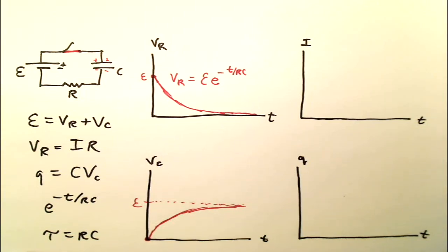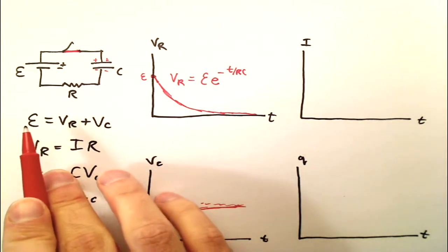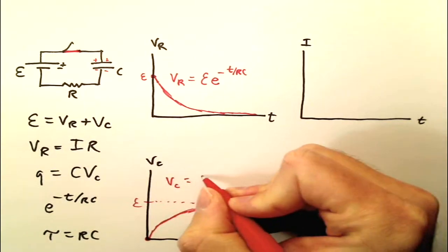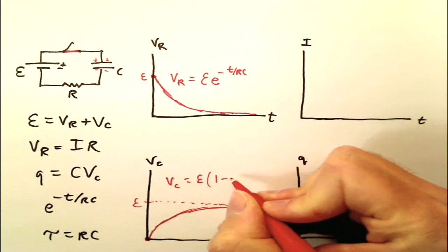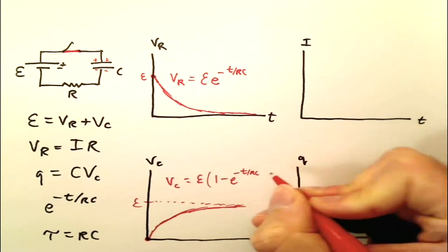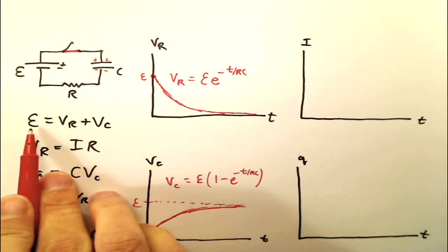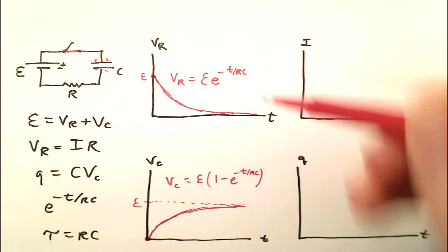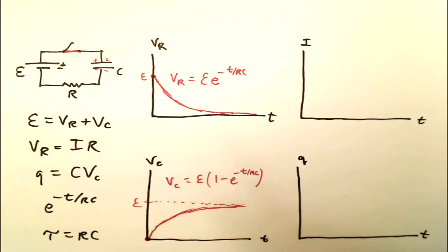What about VC? VC you can get from VR by subtracting VR from the EMF. So E minus this expression gives us VC, so VC gives us E, and I'm going to rearrange this a little bit. I'm going to factor out an E and write it this way, just because that's how you usually see it. What we have here is E times one, which is this E that we're subtracting from, and then we have E times the negative E to the negative T over RC, and that's us subtracting off this term right here. You can see that if you added these two together, you would in fact get E just like that says.